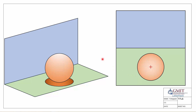So when it comes to looking at a solid such as a sphere, we all know that if you take the likes of a football, whatever direction you look at it from you're always going to see the outline of a circle. So what we're going to look at is how do we know where that outline is in relation to our orthographic view — our plan and our elevation.